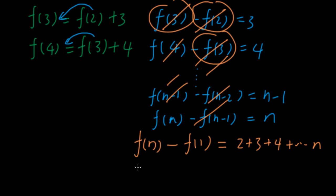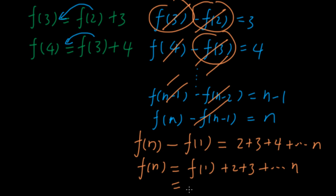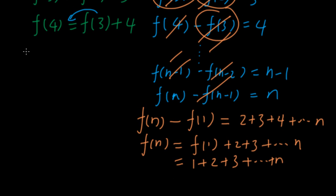Moving f(1) back to the right-hand side: f(n) equals f(1) plus 2 plus 3 plus ... plus n, which is 1 plus 2 plus 3 plus ... plus n. As shown before, this equals one half times n times (n+1). So this is solution 2.